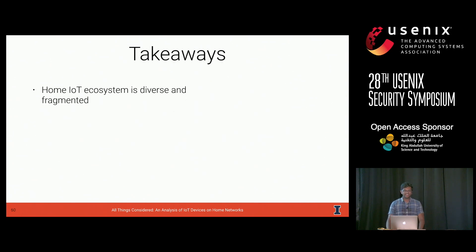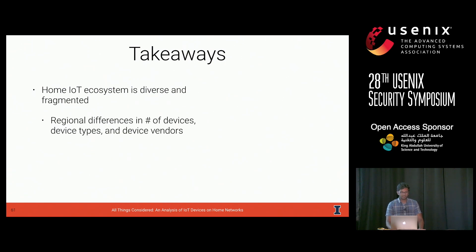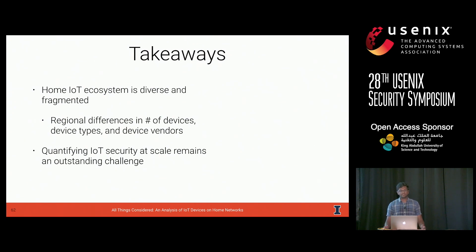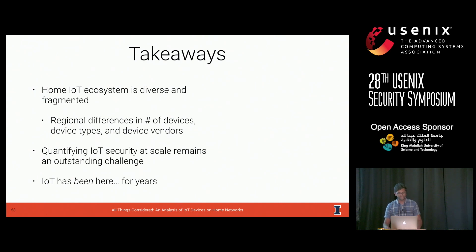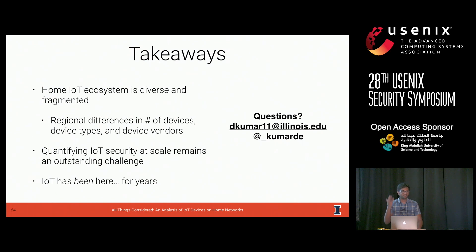So what did we learn? The home IoT ecosystem is diverse and fragmented. When you look globally, there are regional differences at almost every level — number of devices, device types, and vendor preferences. This fragmented ecosystem leads to challenges in quantifying security; there's no silver bullet, and it's challenging to figure out what to focus on. In this study, we looked at the lowest common denominator: weak passwords. But there is a lot still unknown in order to measure the security of these devices at scale. And IoT has actually been here for years — as we investigate new and fun devices and break them in cool ways, let's not forget all the other devices that still exist and are still running Telnet.